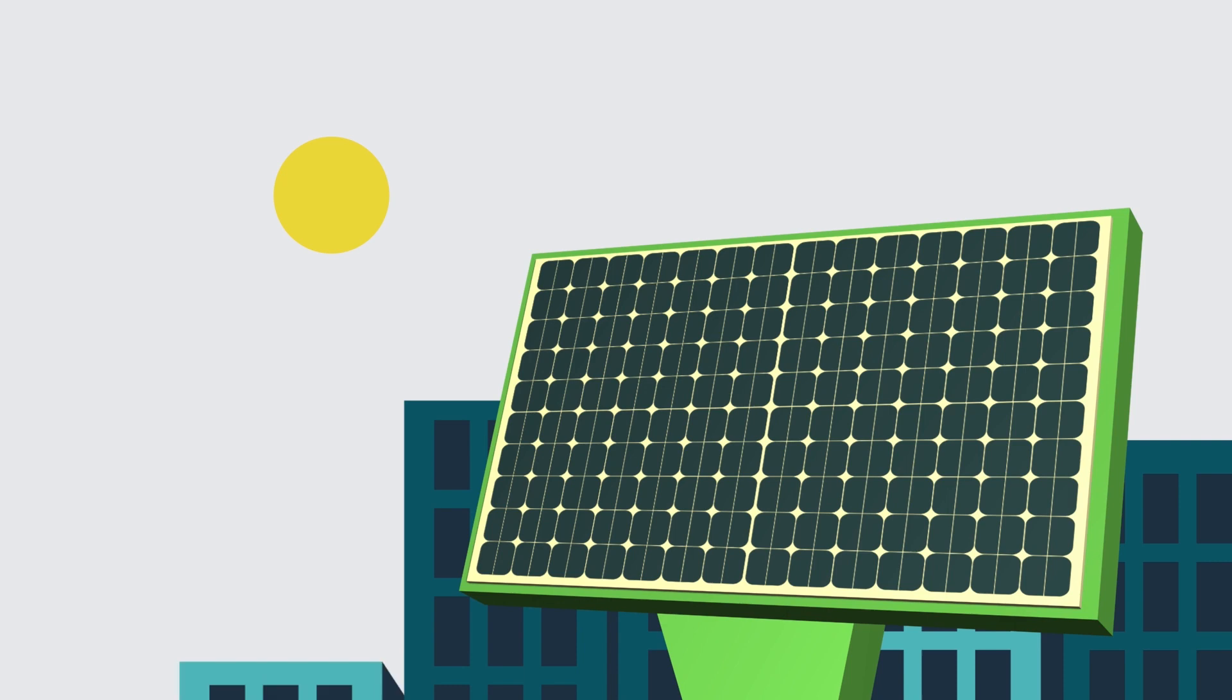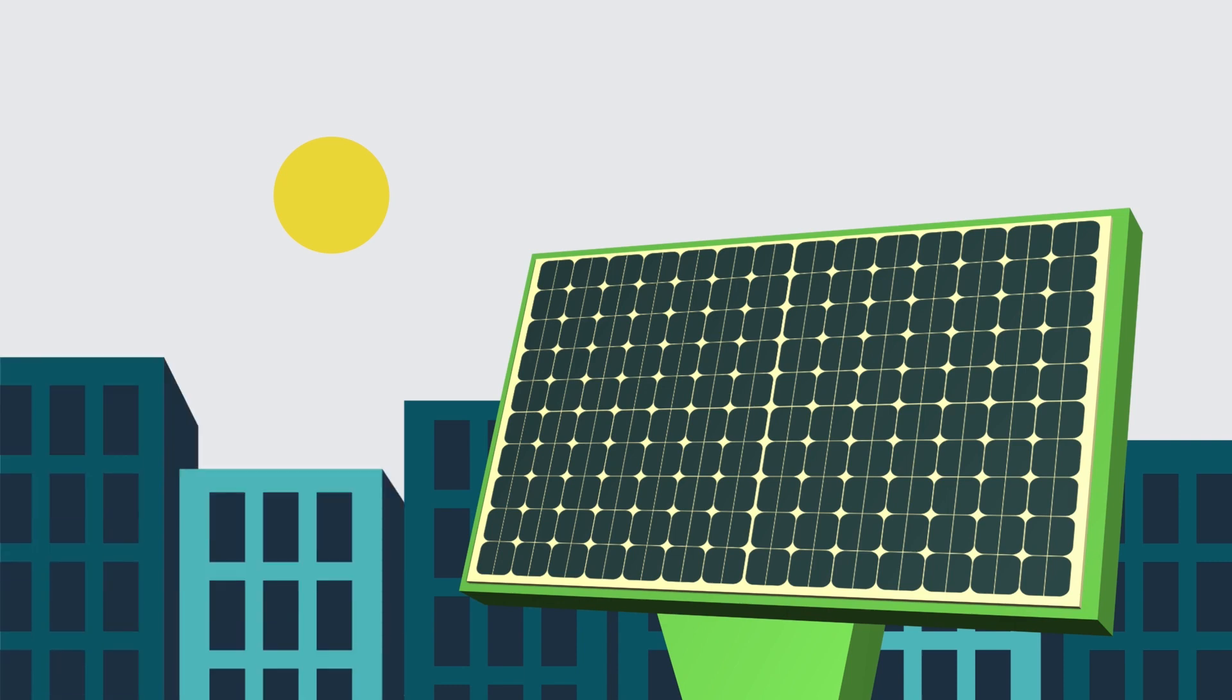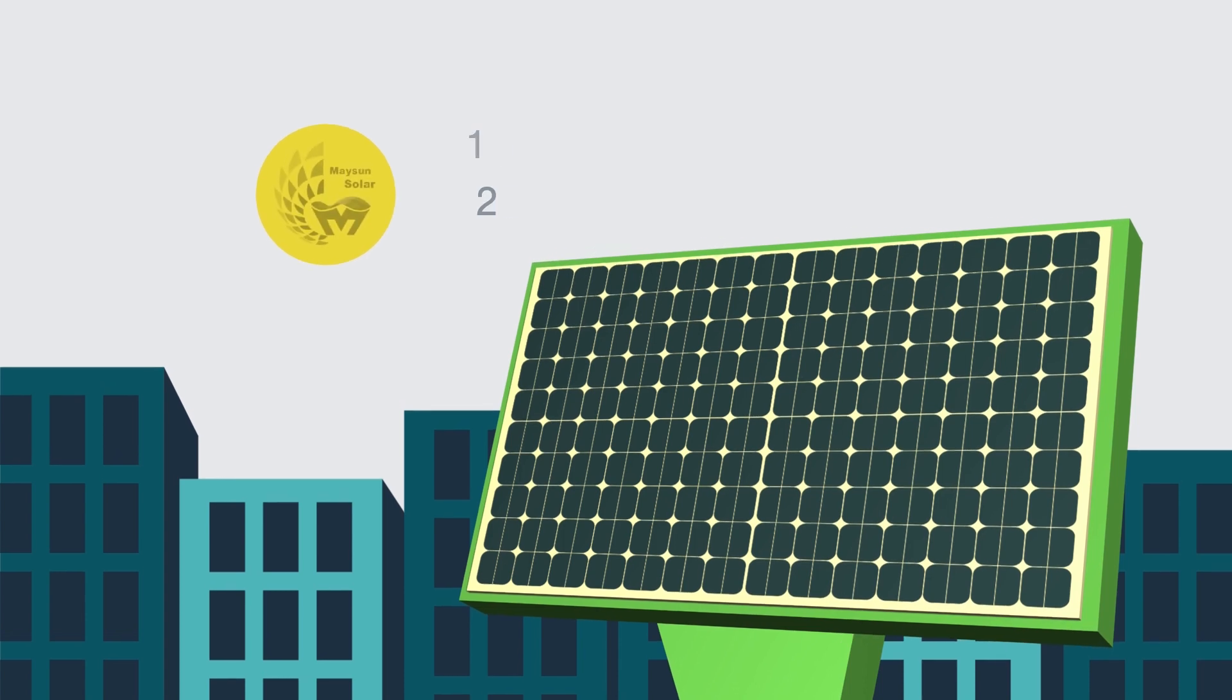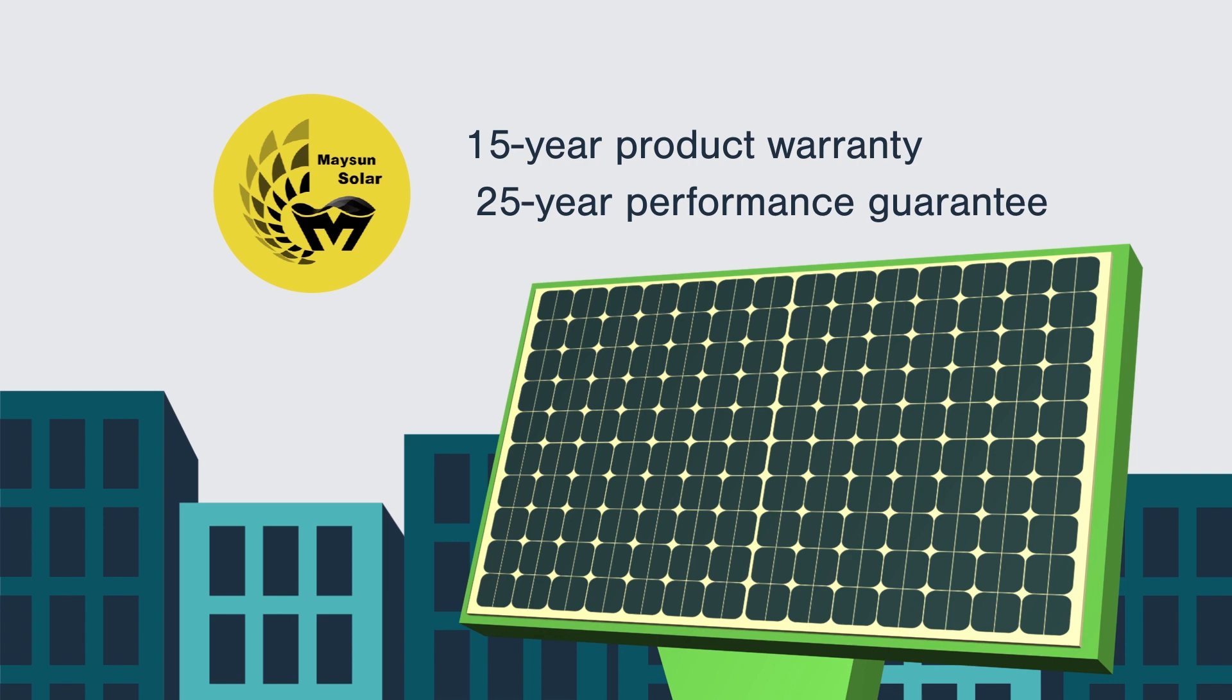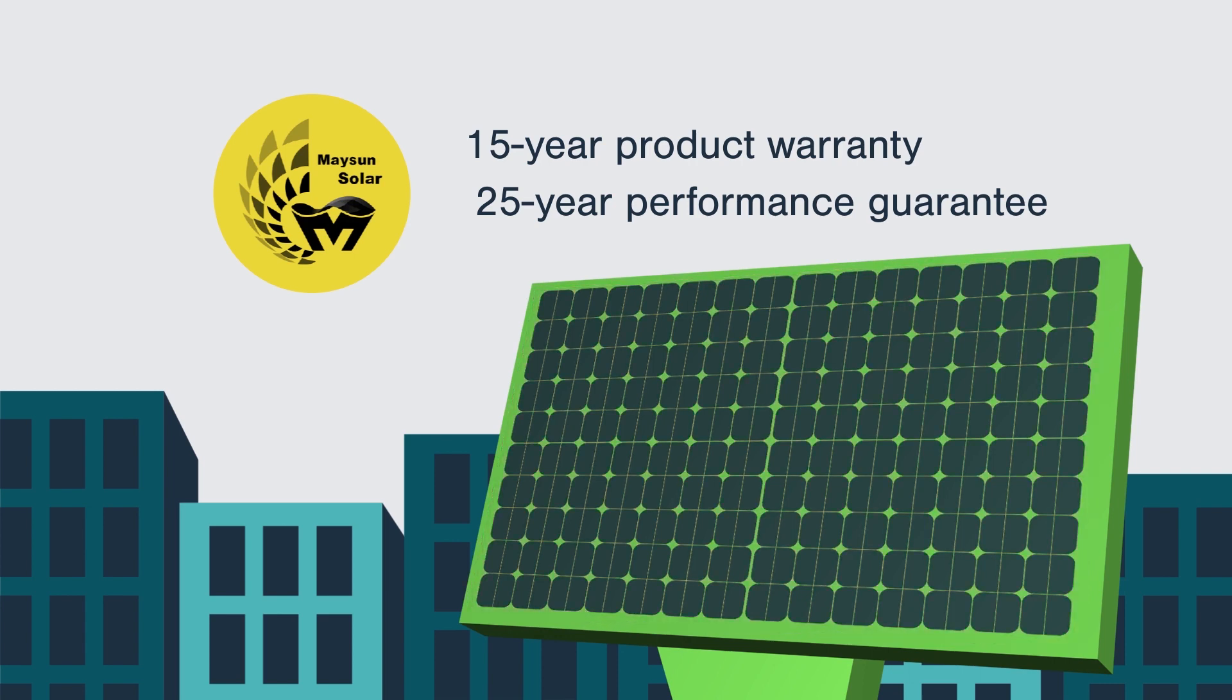As you can see, every Maison solar panel, from the cells to the final delivery, will go through a standardized steps and strict test. Because of our insistence on product quality, we are able to provide consumers with a 15-year product warranty and a 25-year performance guarantee, allowing them to enjoy green and clean energy.